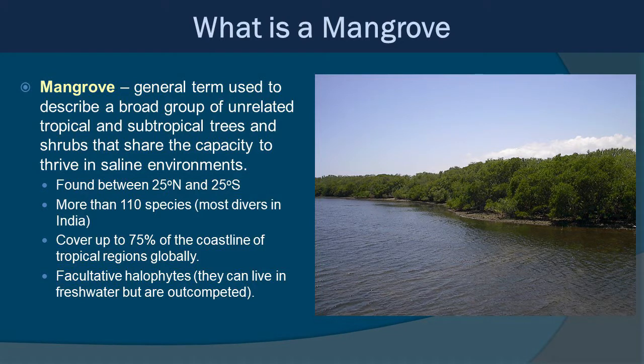Mangrove is a general term used to describe a broad group of unrelated tropical and subtropical trees and shrubs that share the capacity to thrive in saline environments, essentially salt water. They're found between 25 degrees north and south latitude, so that's the tropics and subtropics. There are more than 110 species, and they tend to be incredibly diverse, especially in India. They can cover up to 75% of the coastline in tropical regions globally. They are considered facultative halophytes, which essentially means they don't have to grow in salt water — they can grow in freshwater just as well — but they tend to be outcompeted in freshwater habitats by other plants. So their niche is really that saltwater environment.